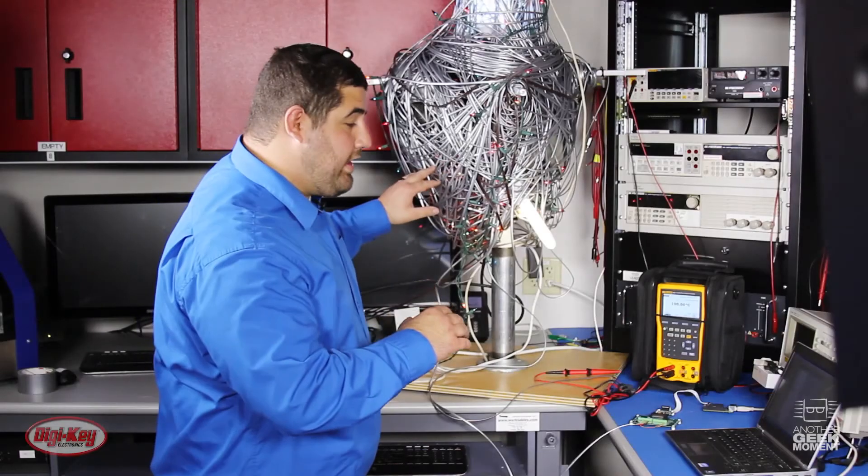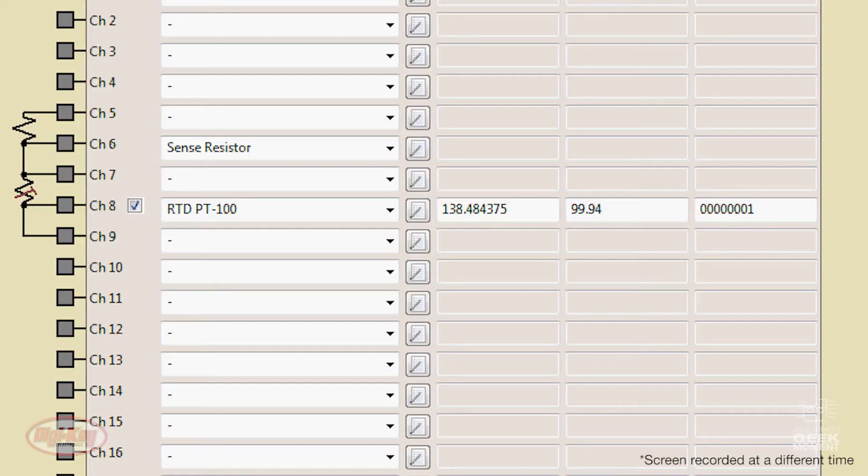All right, now that we have all this noise going into it, you can see the output on the GUI. We're right at 100, 100.1, so we're still well within our tolerance.